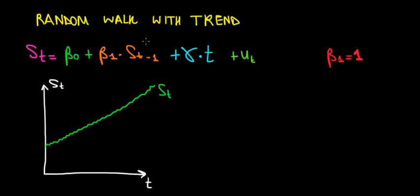In this video, let's have a look at the last type of random walk, which is going to be a random walk with trend. We're going to see the contrast between this one and the previous one where we had it with a drift.